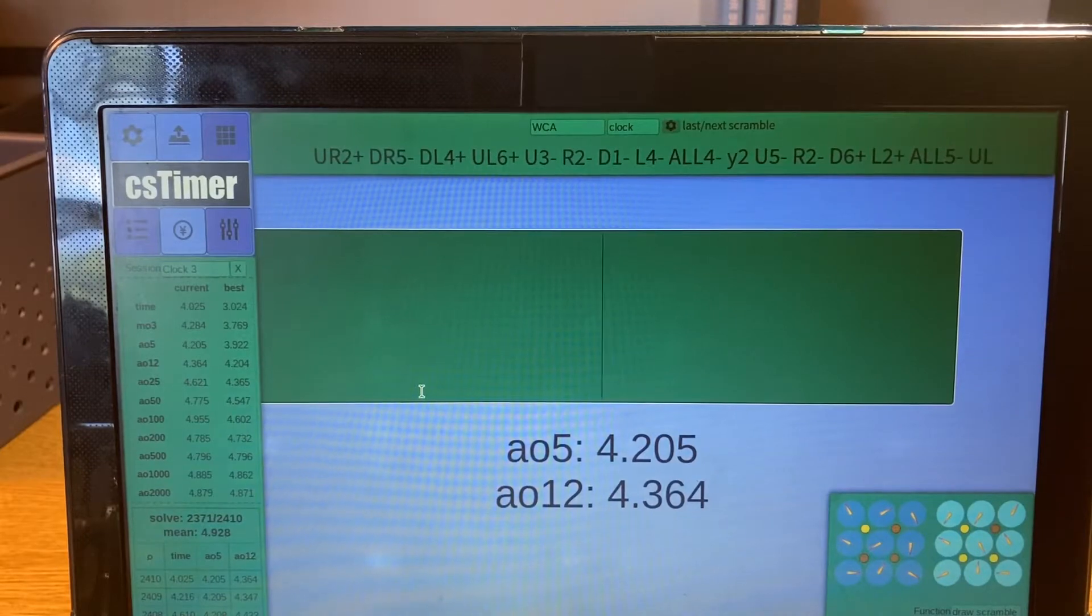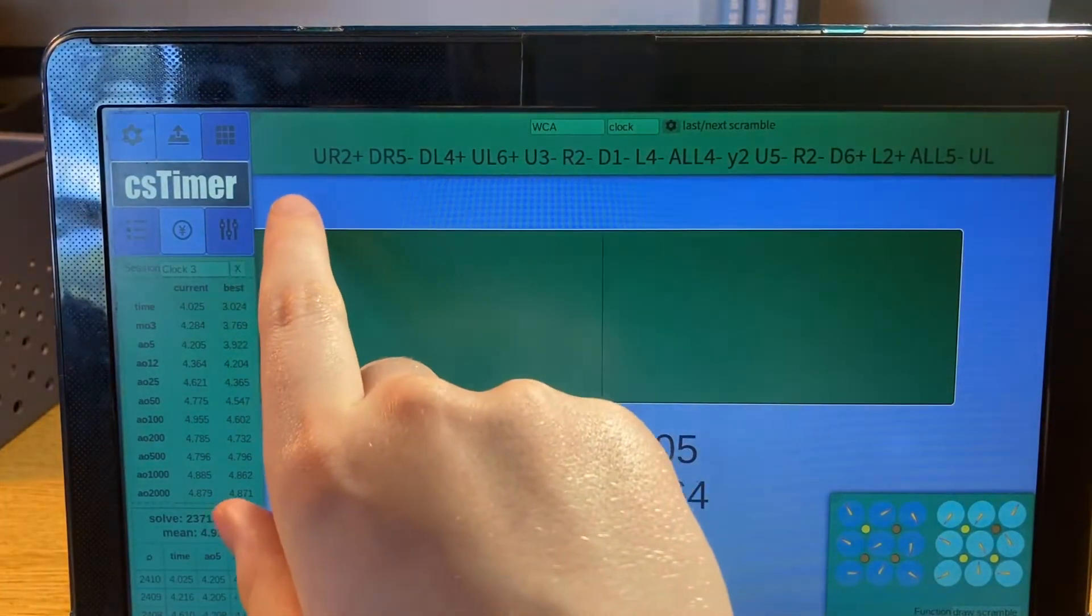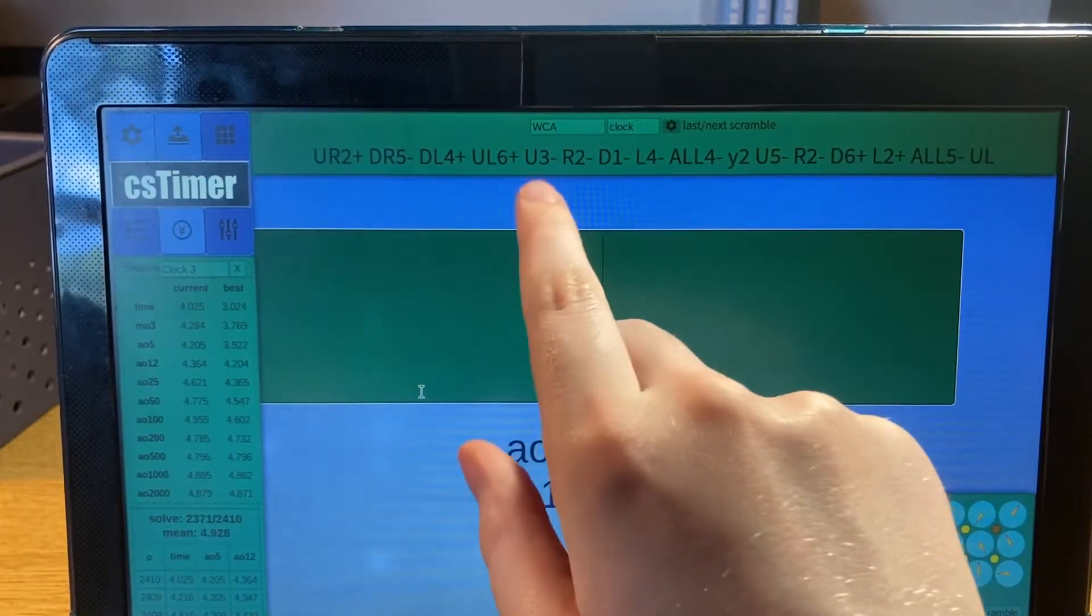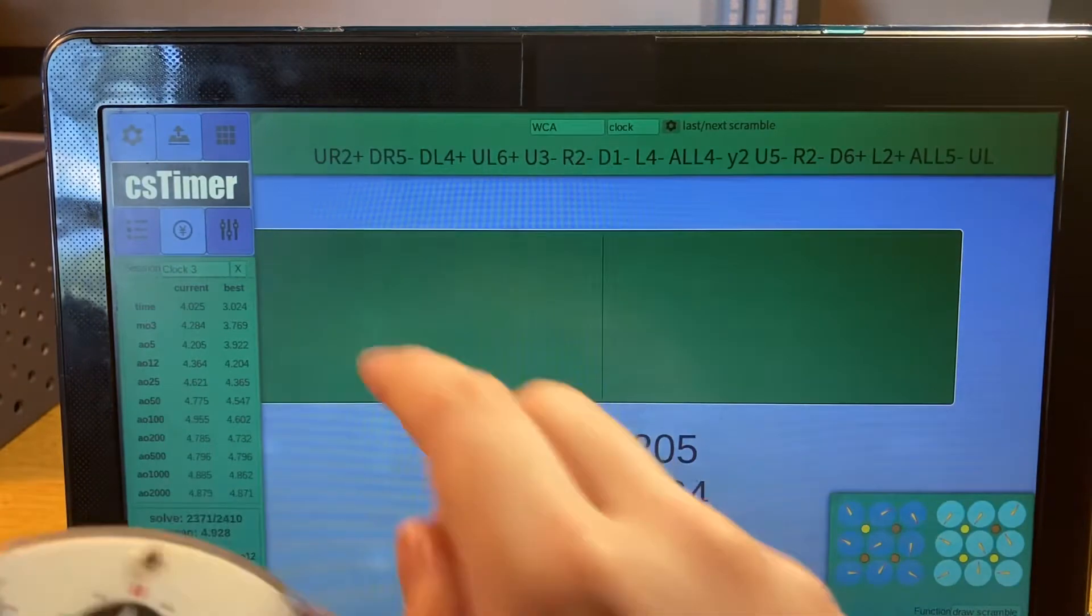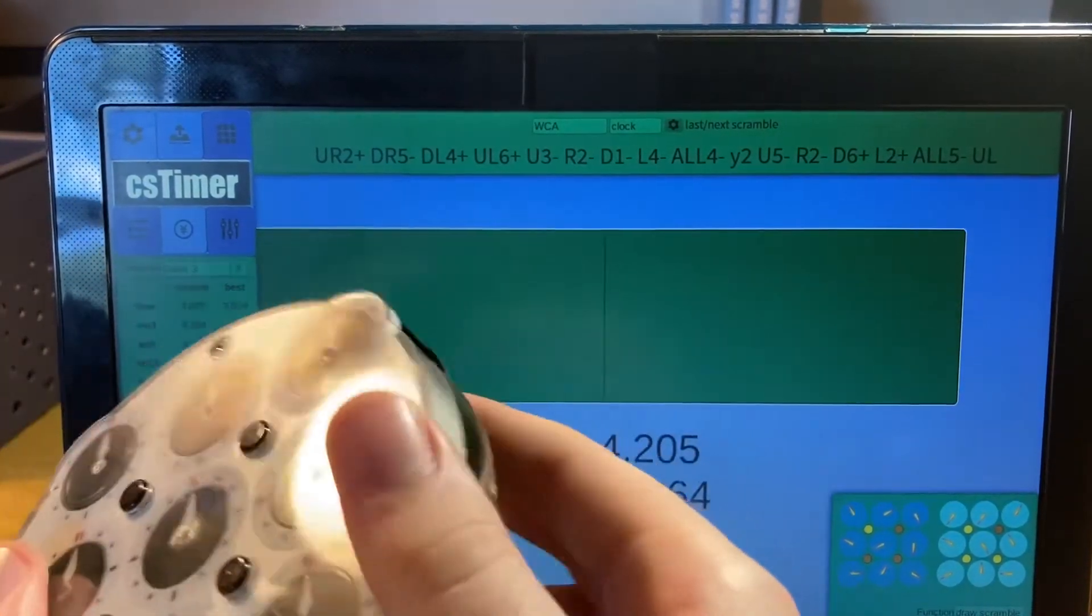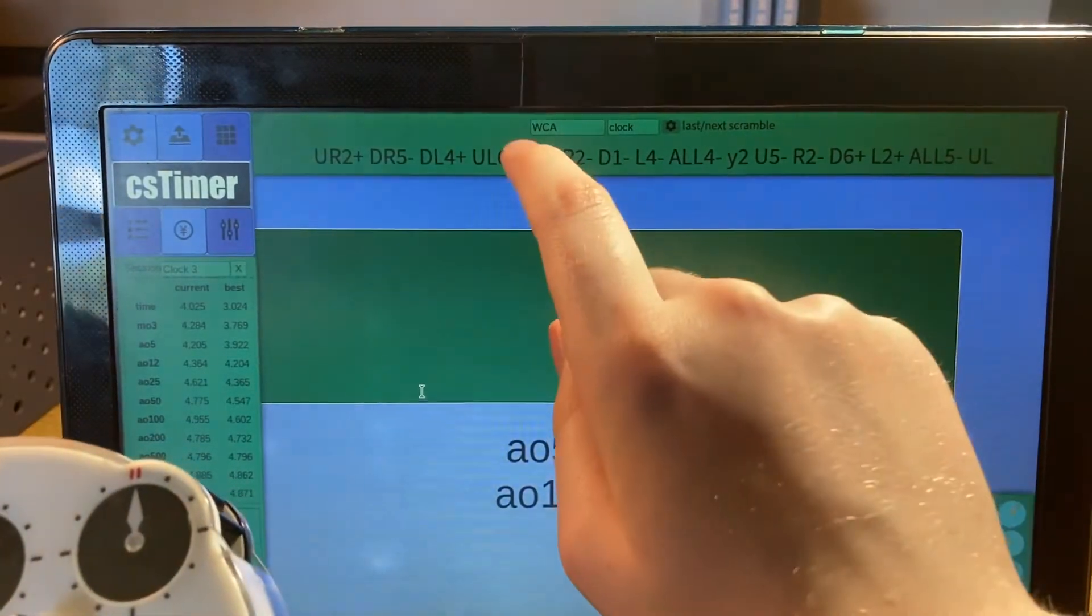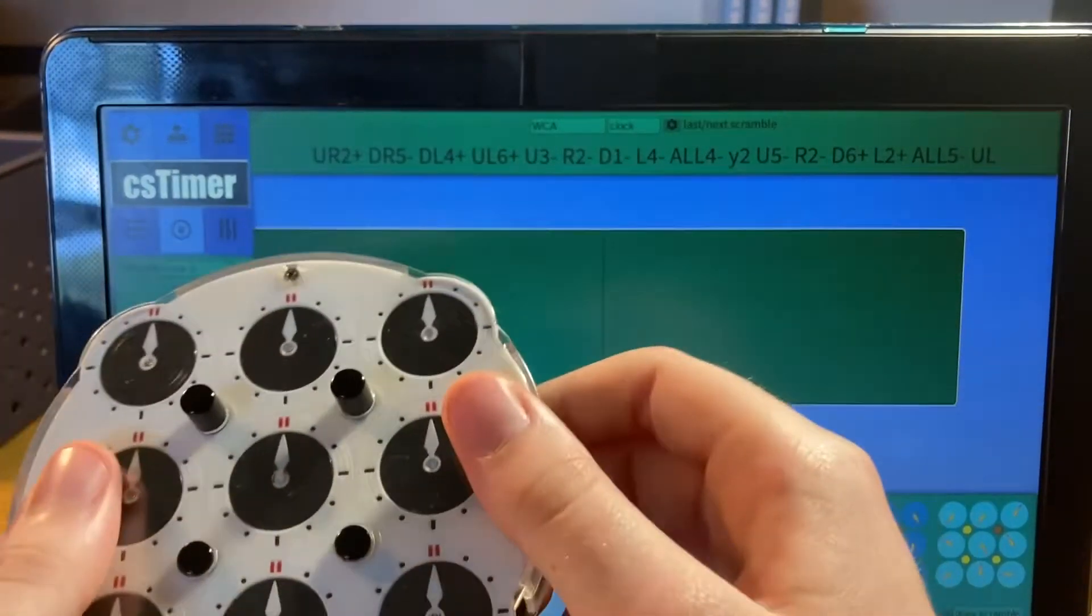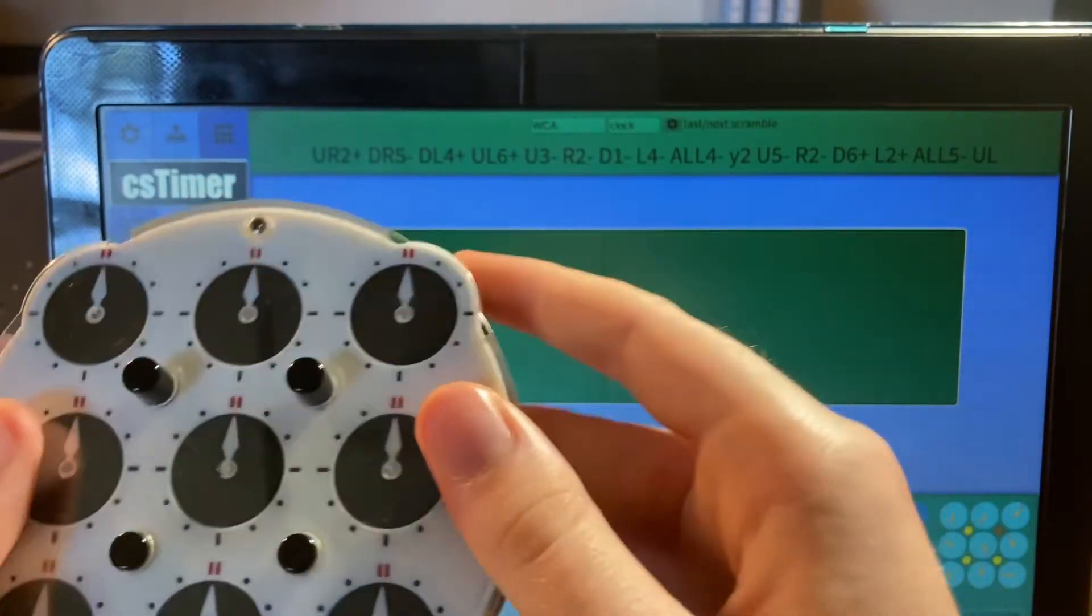Before you learn how to solve a clock, you need to know how to scramble one. Clock scrambles tell you which specific pin you're turning and then a number with either a plus or minus sign. Something like UR means you're turning the top right pin, U means both top pins up.